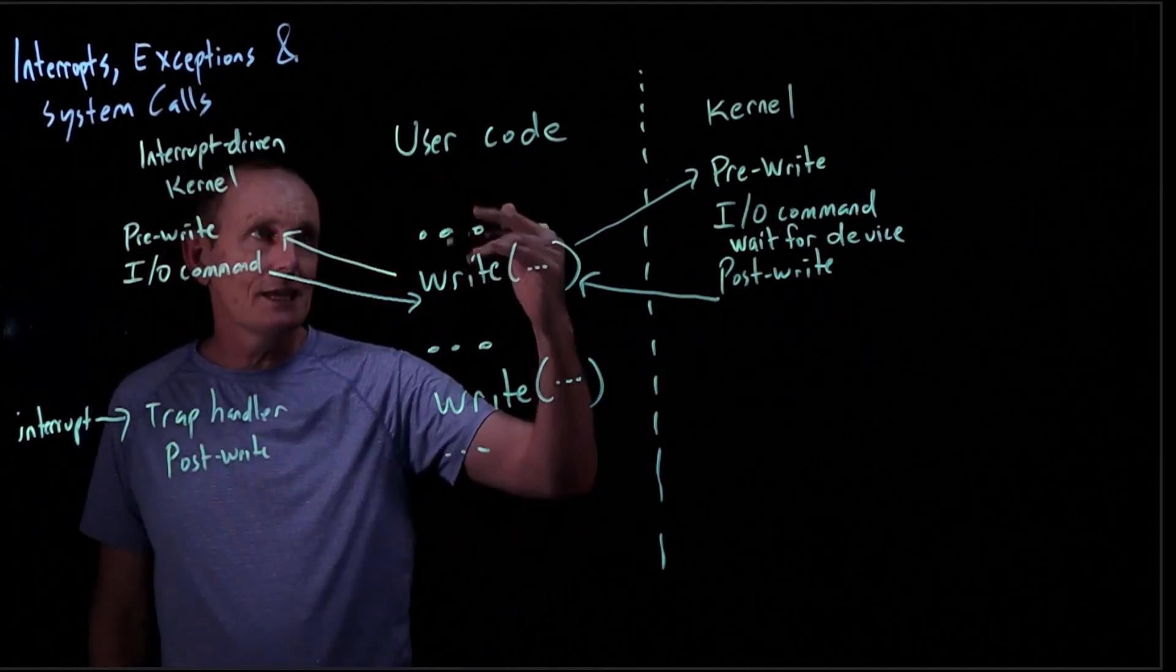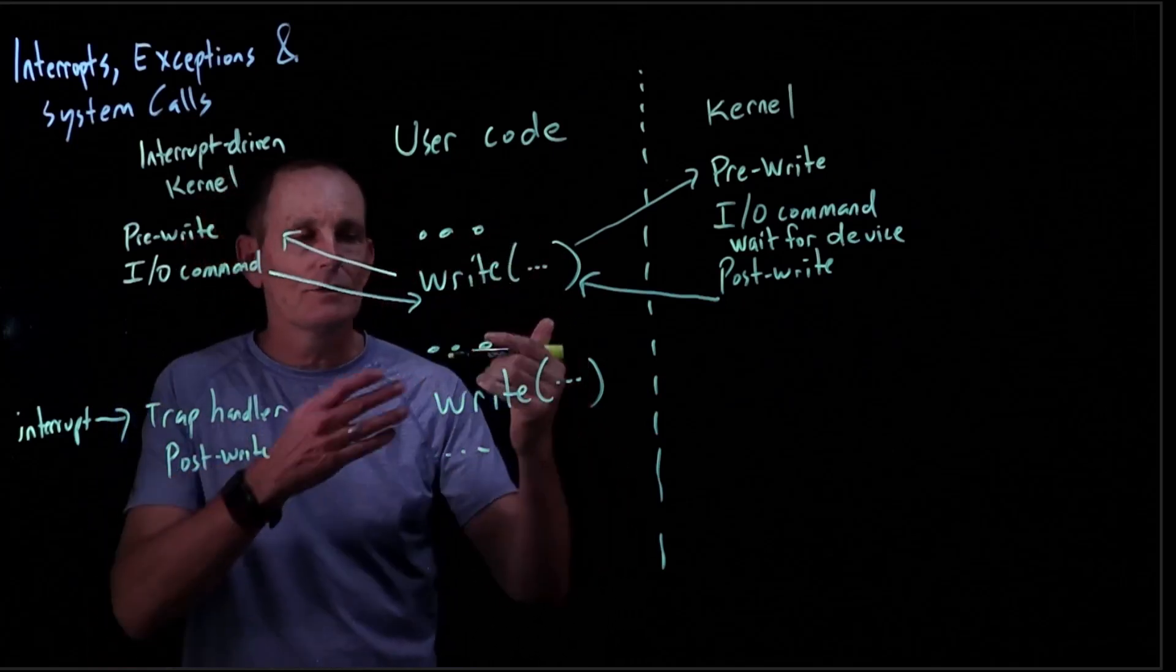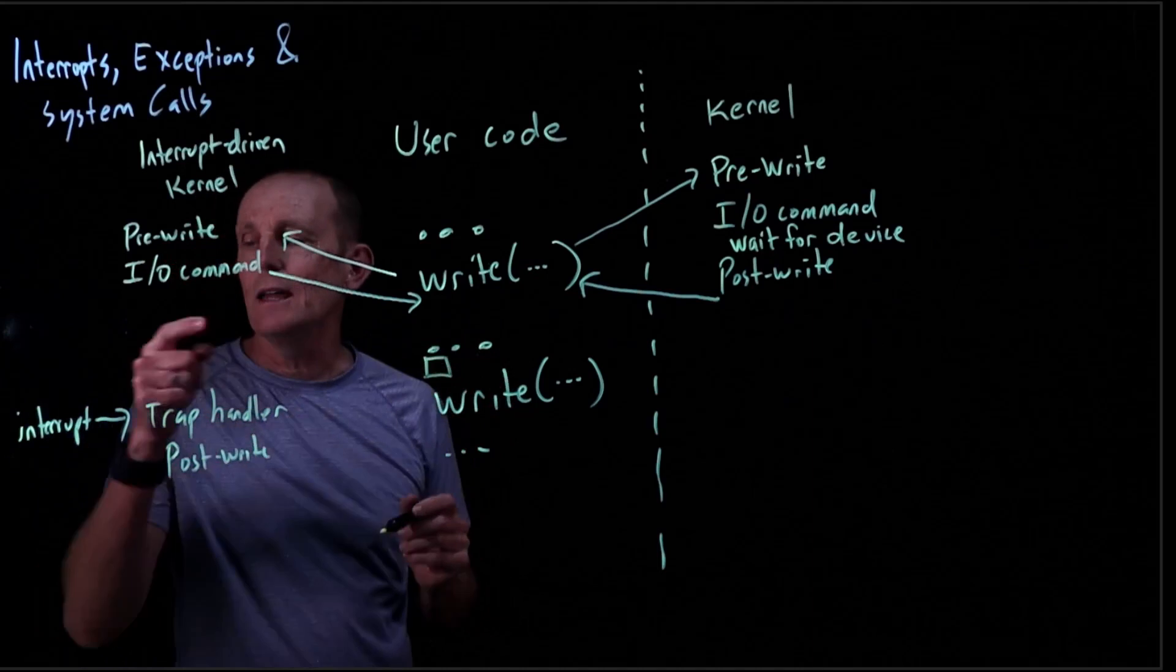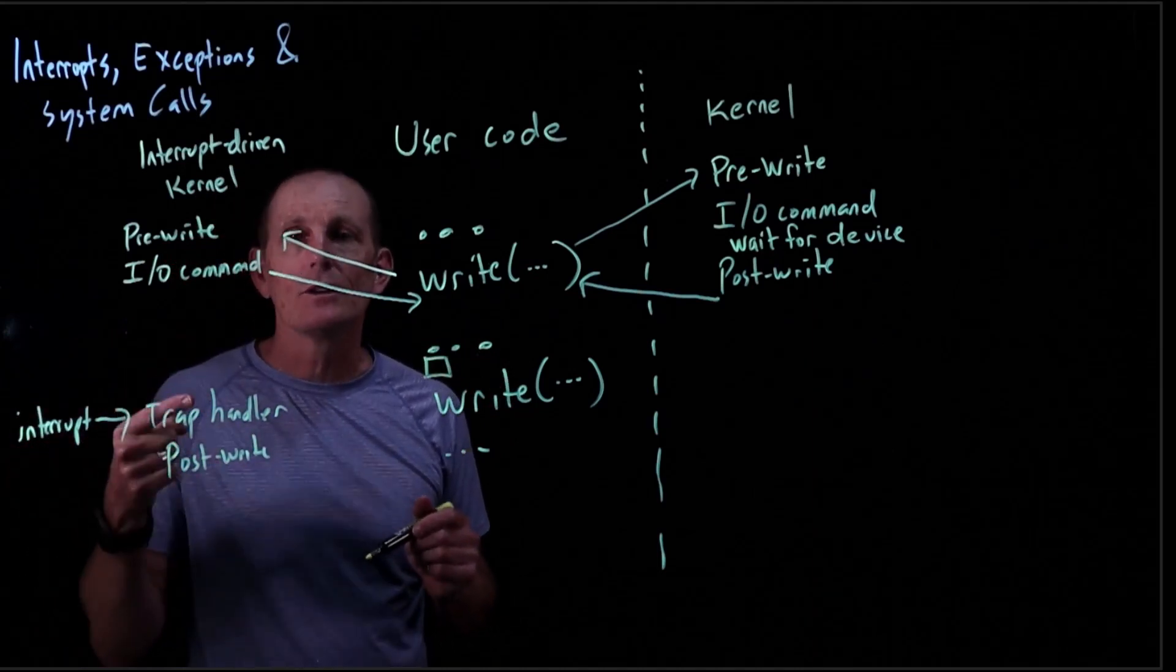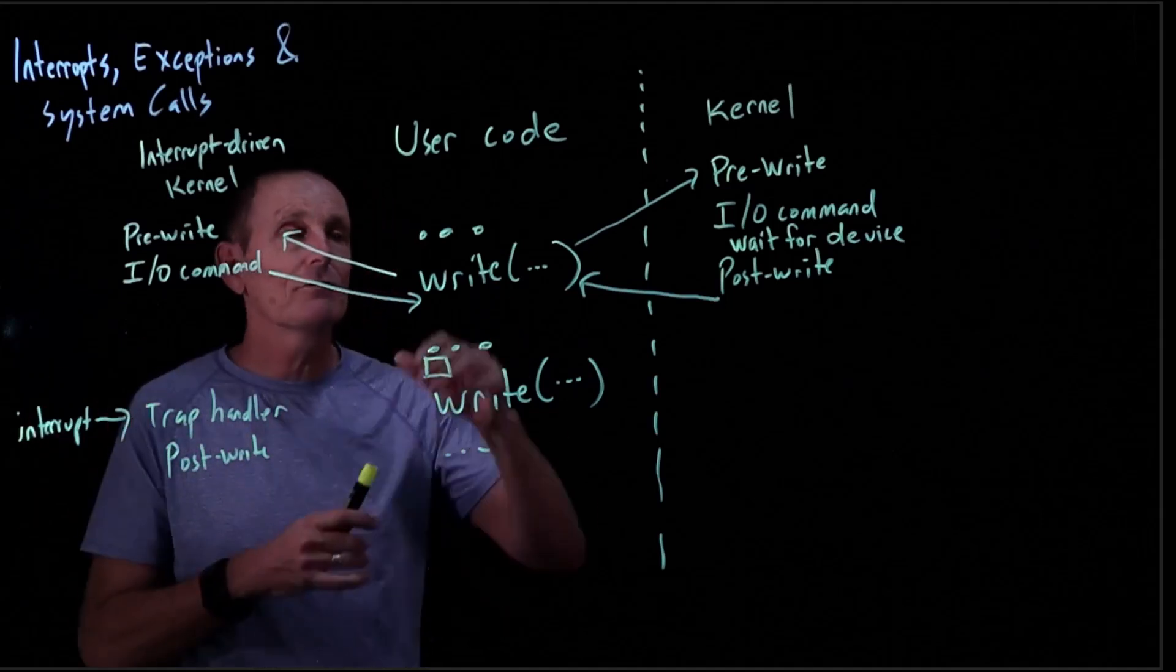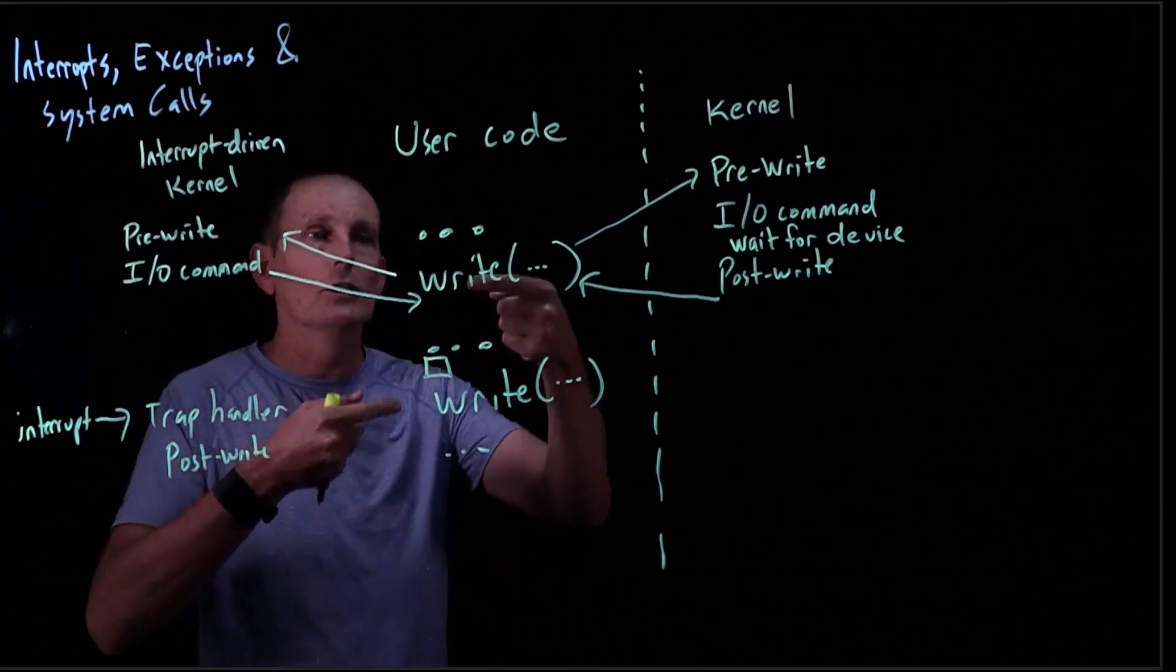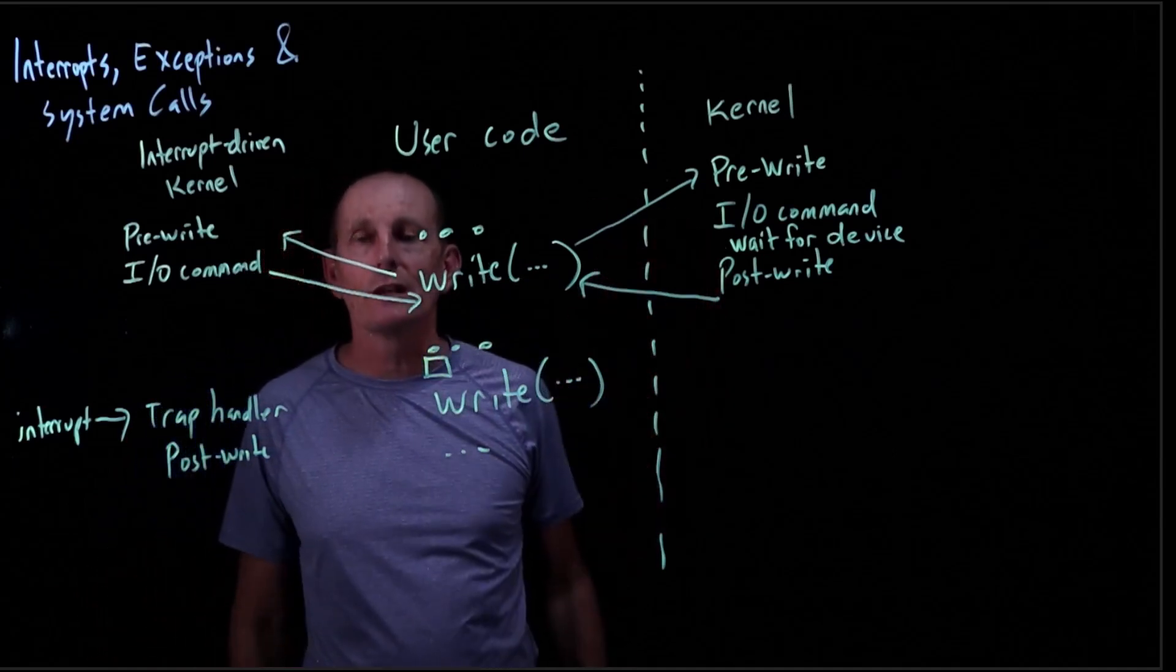When will this interrupt happen? Let's say we're running in the user code when the interrupt happens. That's going to jump us out. We were about to execute that instruction; instead, we get interrupt. We go to the trap handler, now in kernel mode. It figures out what it is, does the post write, then returns back. As far as this code is concerned, there's no difference except the write call was a lot quicker.